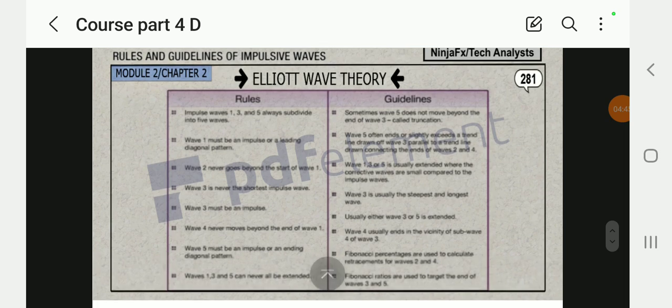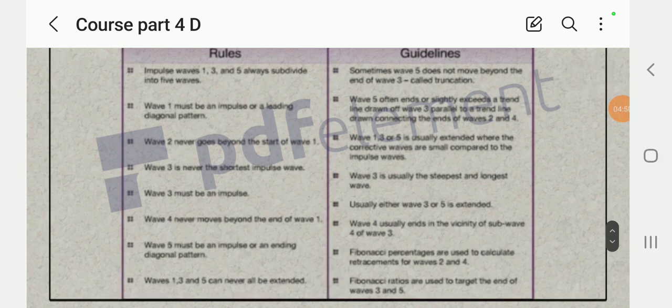Rules and guidelines of impulse of Elliott Wave Theory. Let me just do a little bit. Impulse waves one, three, and five always subdivide into five waves. Okay, wave one must be an impulse or a leading diagonal pattern. Wave two never goes beyond the start of wave one. Wave three never is the shortest impulse. Wave three must be an impulse. Wave four never moves beyond the end of wave one. Wave five must be an impulse or an ending diagonal pattern. Wave one, three, and five can never be all extended.